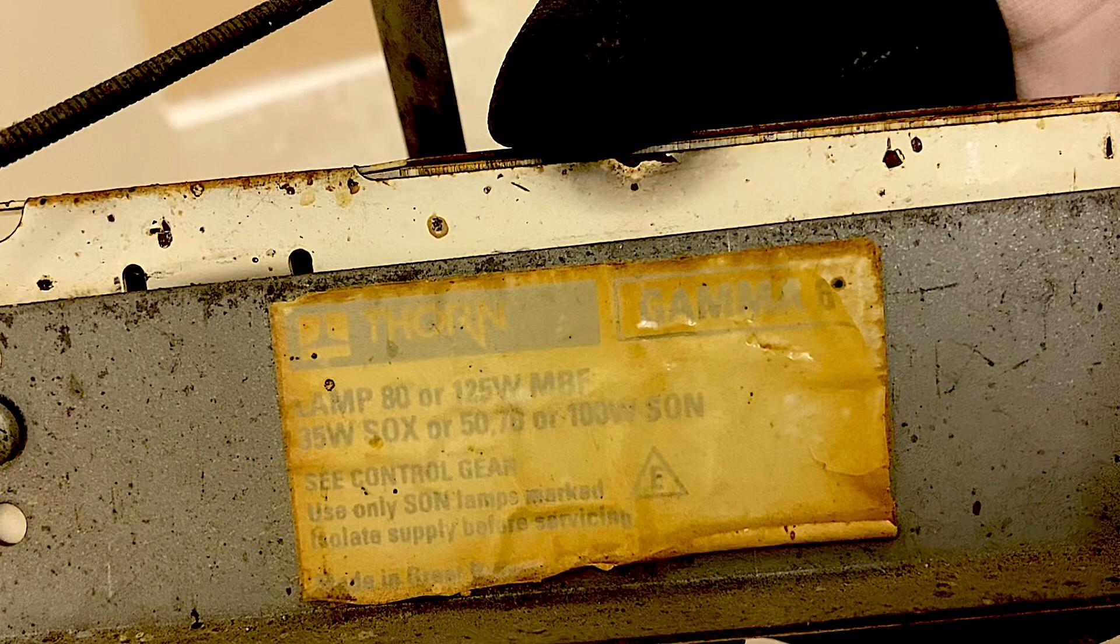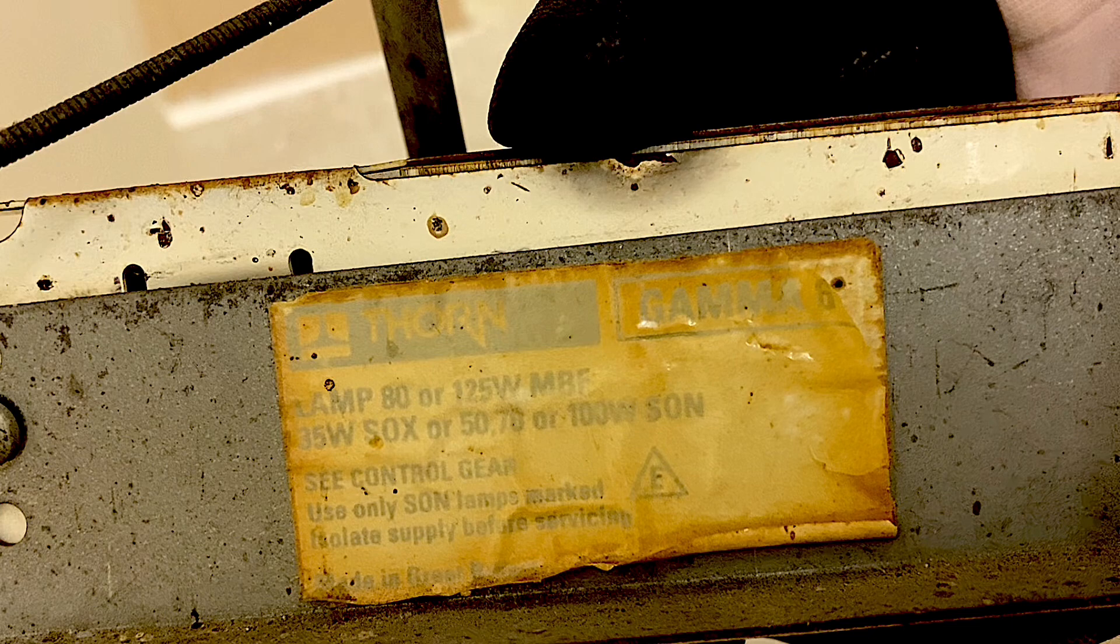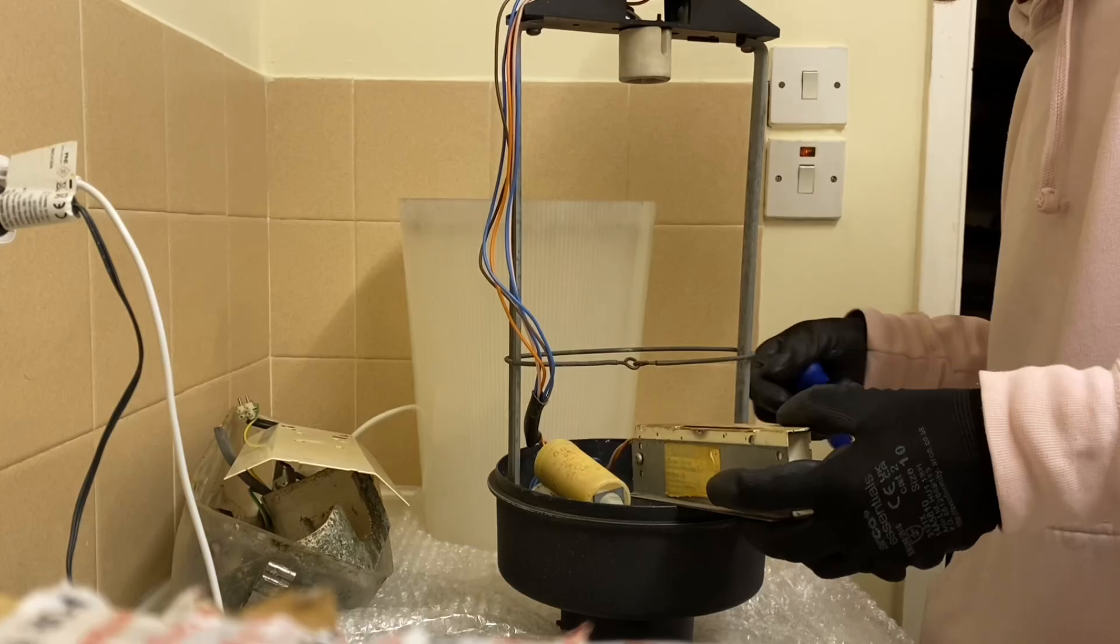But what there is, is the sticker. Thorn Gamma 6 lamp: 80 or 125-watt MBF, 35-watt SOX or 50, 70 or 100-watt SON. See control gear. Use only SON lamps marked E, which is elliptical. Isolate supply before servicing. Made in Great Britain.